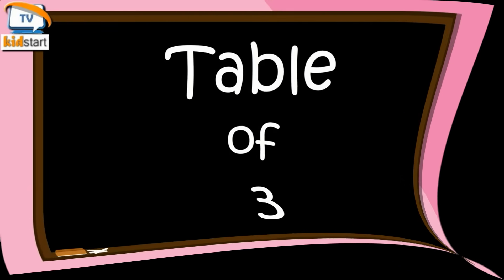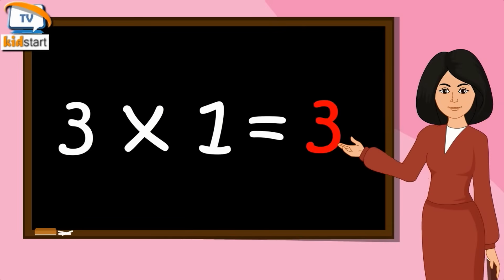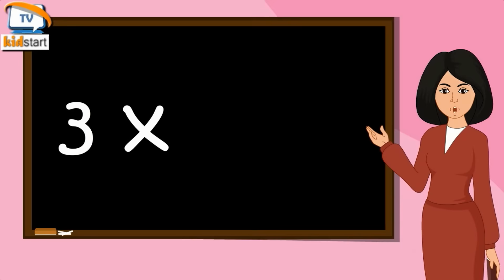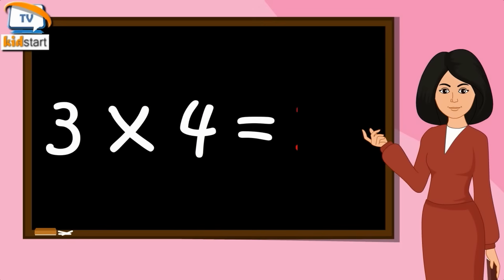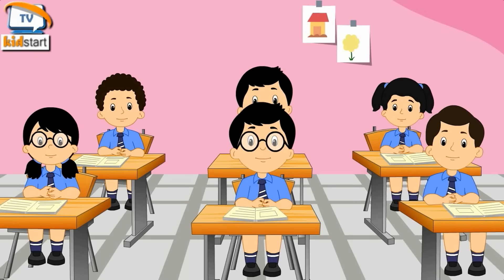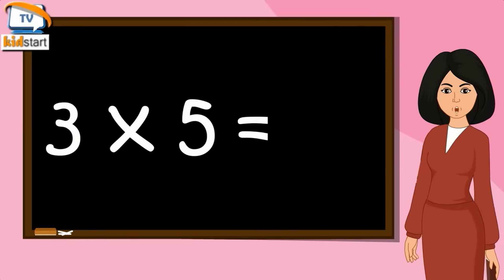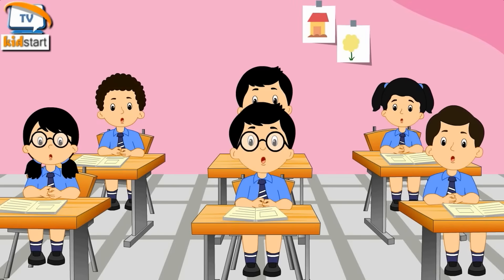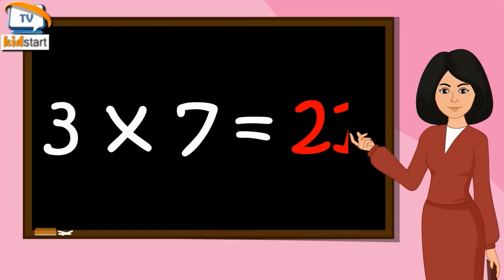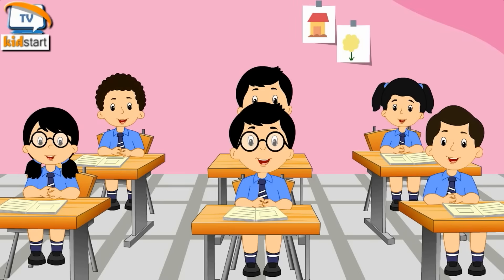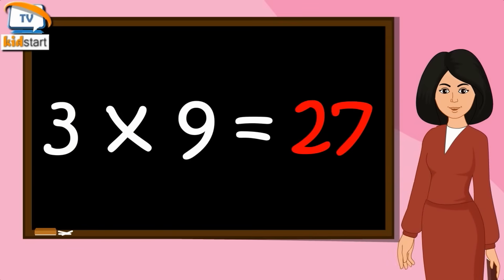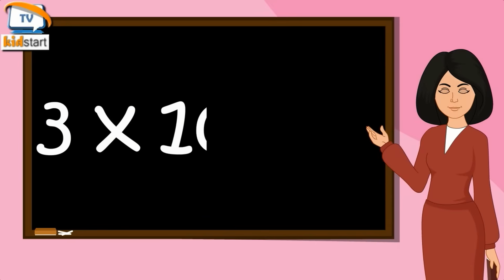Table of Three. Three ones are three. Three twos are six. Three threes are nine. Three fours are twelve. Three fives are fifteen. Three sixes are eighteen. Three sevens are twenty-one. Three eights are twenty-four. Three nines are twenty-seven. Three tens are thirty.